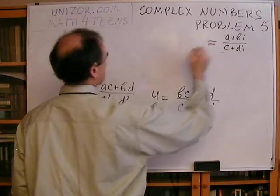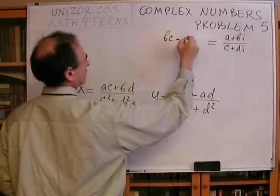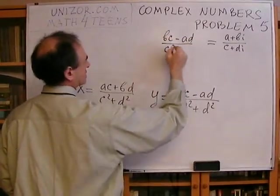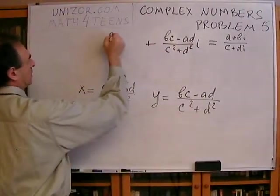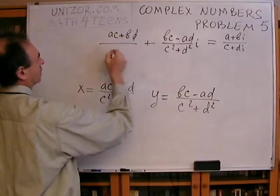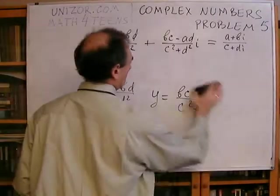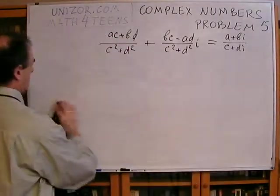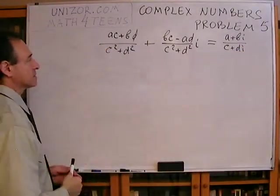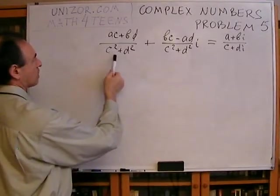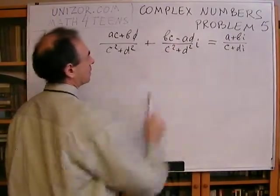So, this thing is equal to, let me start from this, BC minus AD divided by C squared plus D squared I plus AC plus BD divided by C squared plus D squared. So, that's the result of the division. So, we have divided two complex numbers, and we got the result, a complex number.